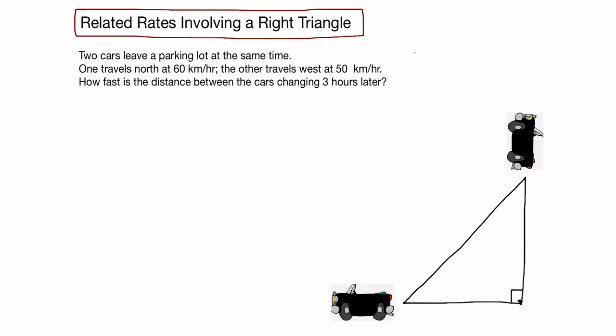We'll call the distance traveled in the north direction y, the distance traveled in the westerly direction x, and therefore the distance between them r — which would be the hypotenuse of this right-angle triangle.